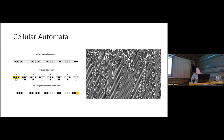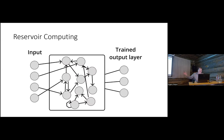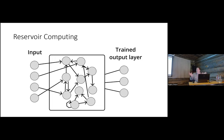I'm combining cellular automata with reservoir computing. In a typical machine learning framework you have some input and a desired output, but instead of training layers via backpropagation, you have a typically recurrent neural network set up at some specific activity level. You inject your information into that reservoir and it performs some feature separation.